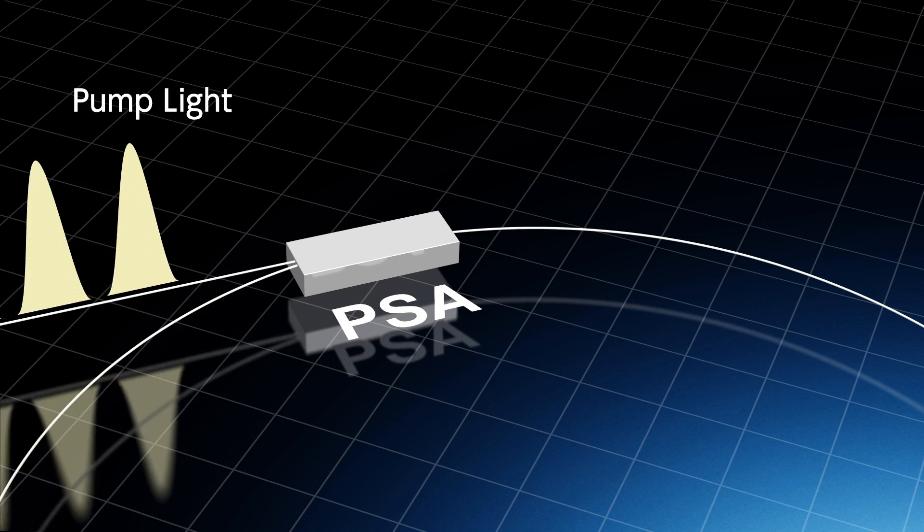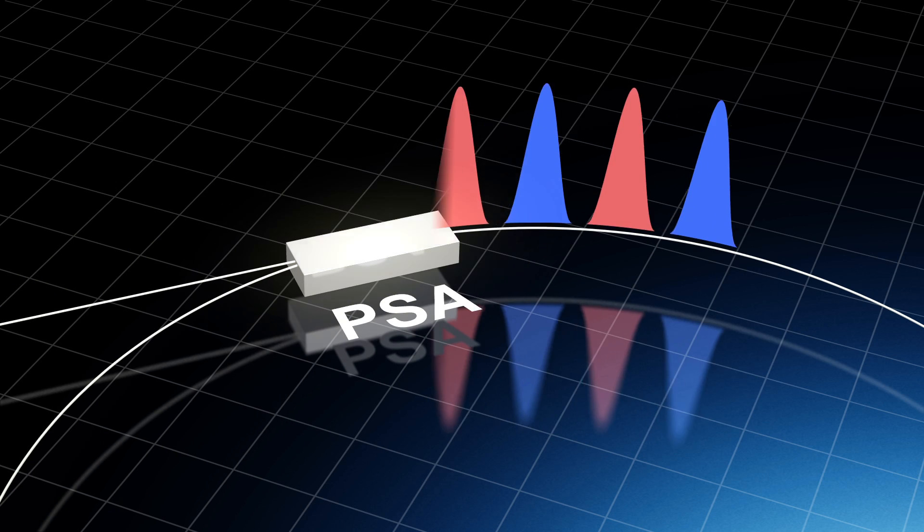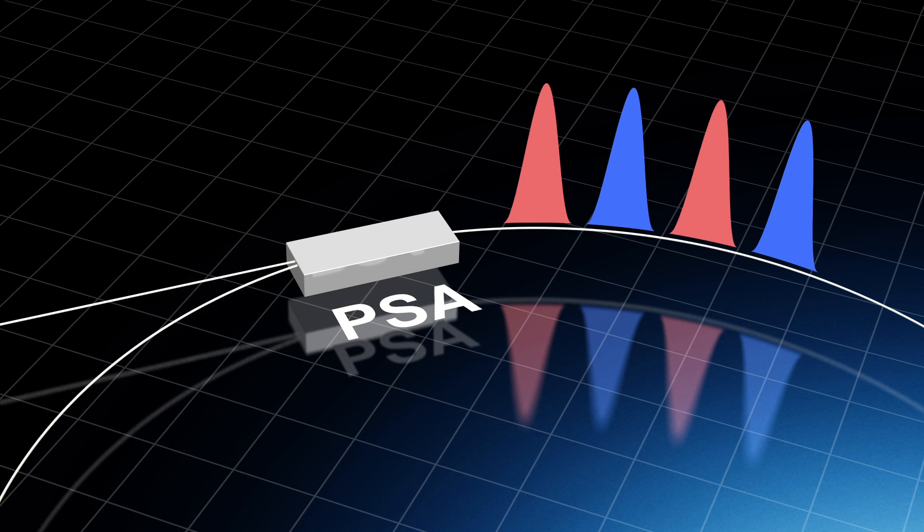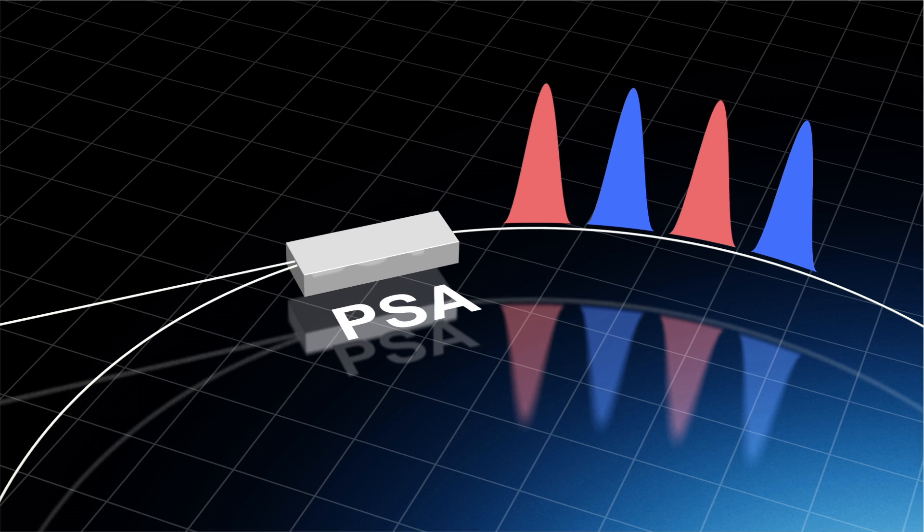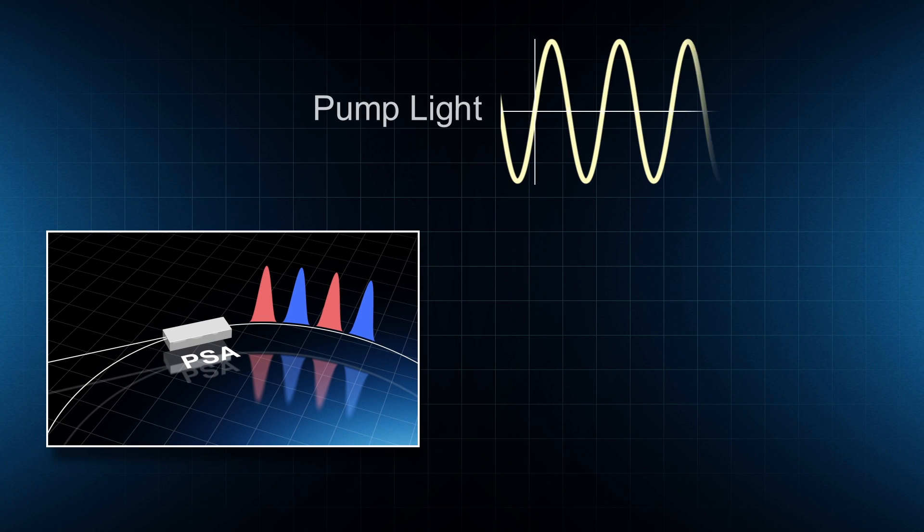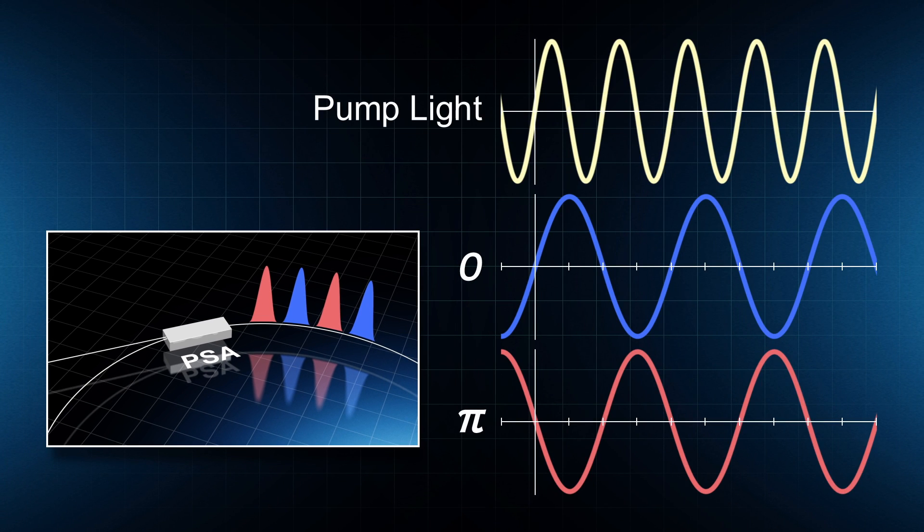The PSA receives pump light and uses its energy to amplify light. Only light whose wavelength is twice the wavelength of the pump light is amplified here.